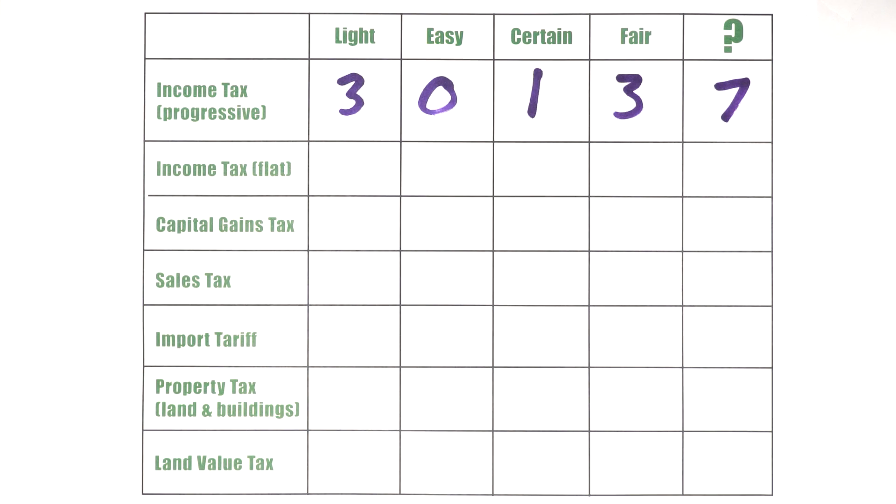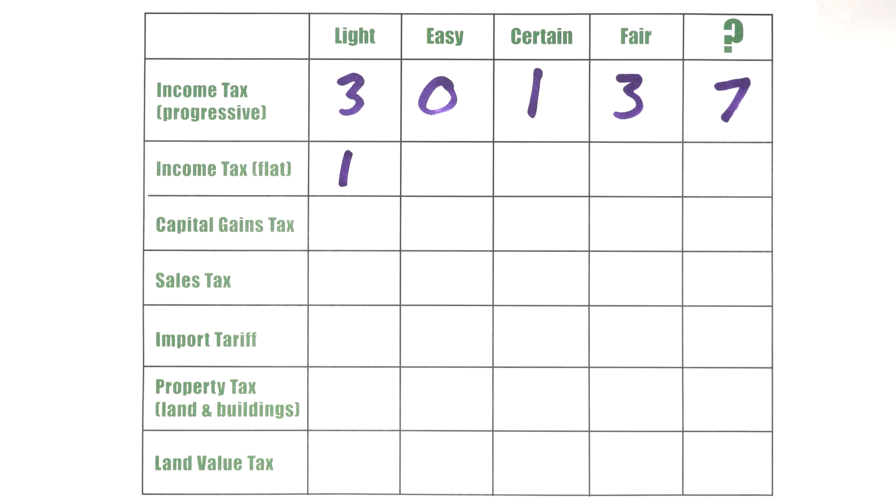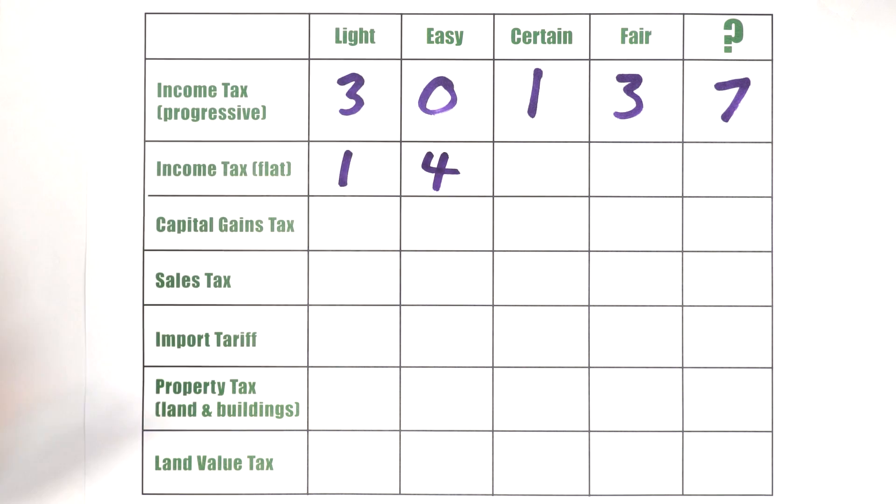Let's move on to a proposal that many conservatives have made to simplify the tax code by having a flat income tax. Same tax rate on all income for everyone high and low. Is it light on production? Not as much because it takes a bigger burden from people who have less money to spend. We're only going to give it a one on that one. Is it easy and cheap to collect? Well, we've taken away the huge complex tax code so it might have, it might do a little bit better on the easy and cheap to collect score. It might even be almost good on that.